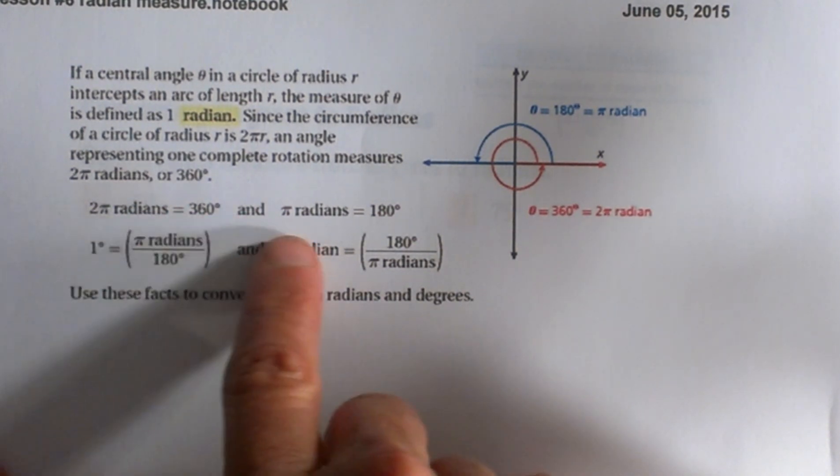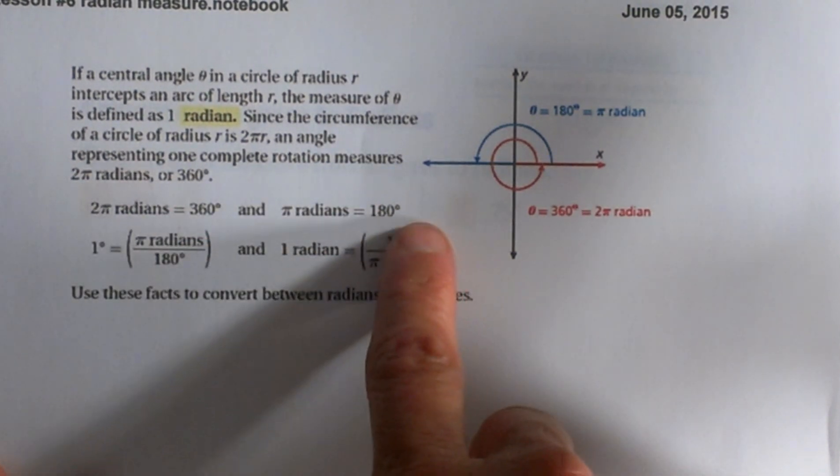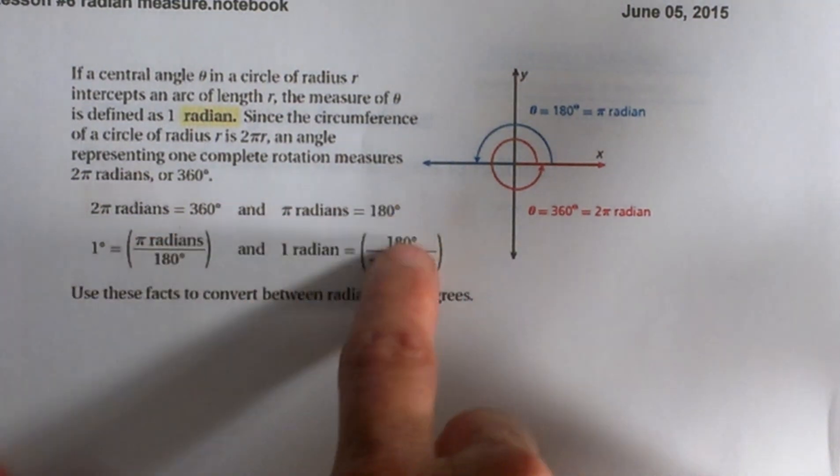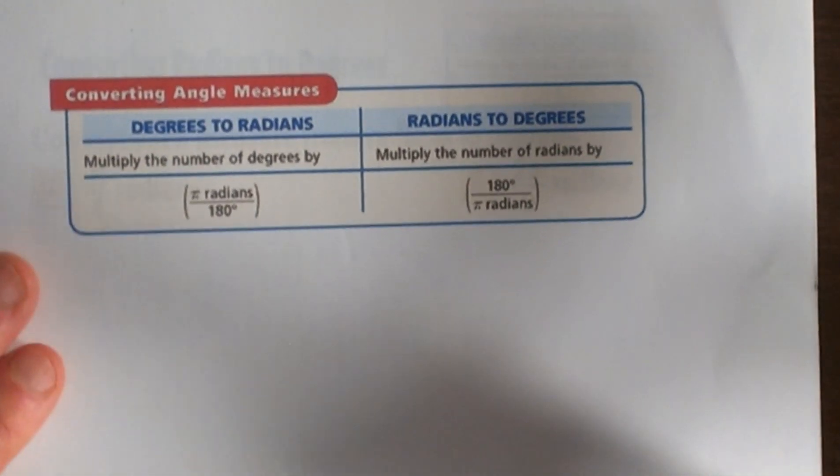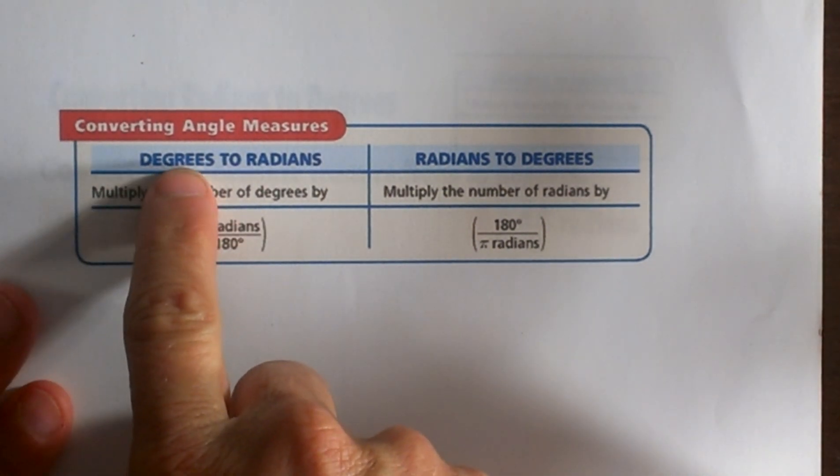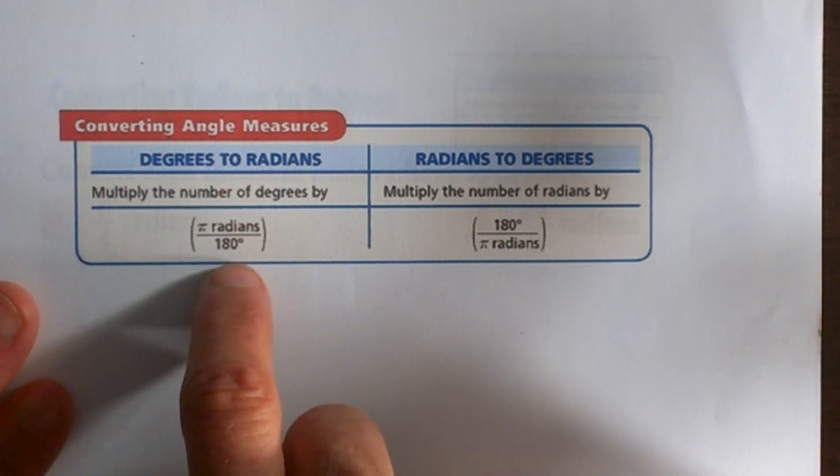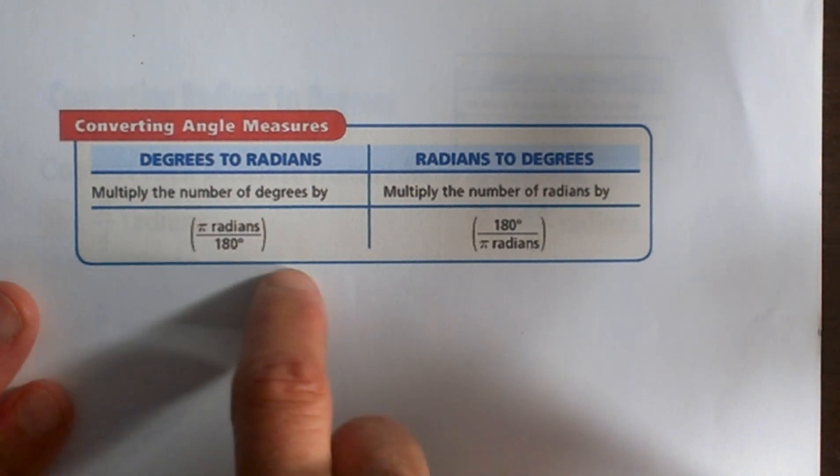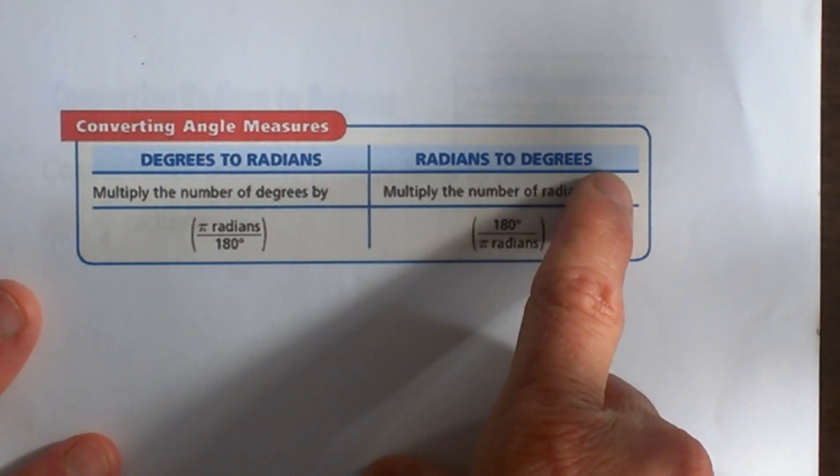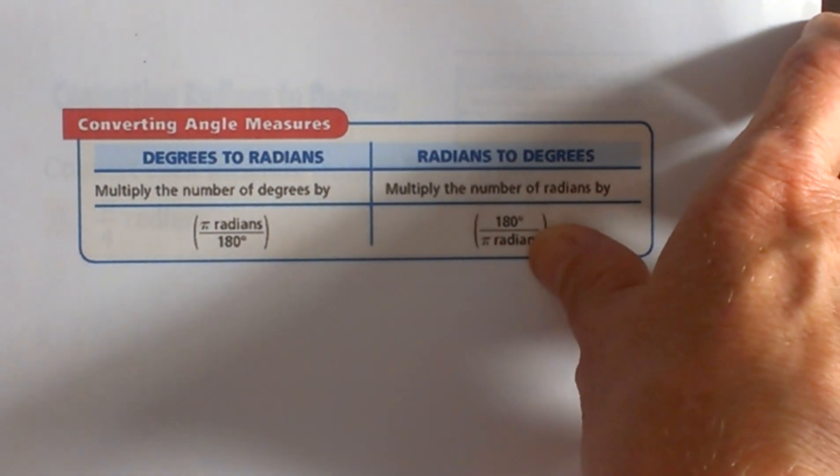We can reduce that to π radians equals 180 degrees. You can just divide both sides by 2 to get your conversion. To go from degrees to radians, take your degree measure and multiply it by π over 180. To convert from radians back to degrees, multiply it by 180 over π. Let's look at a couple examples.